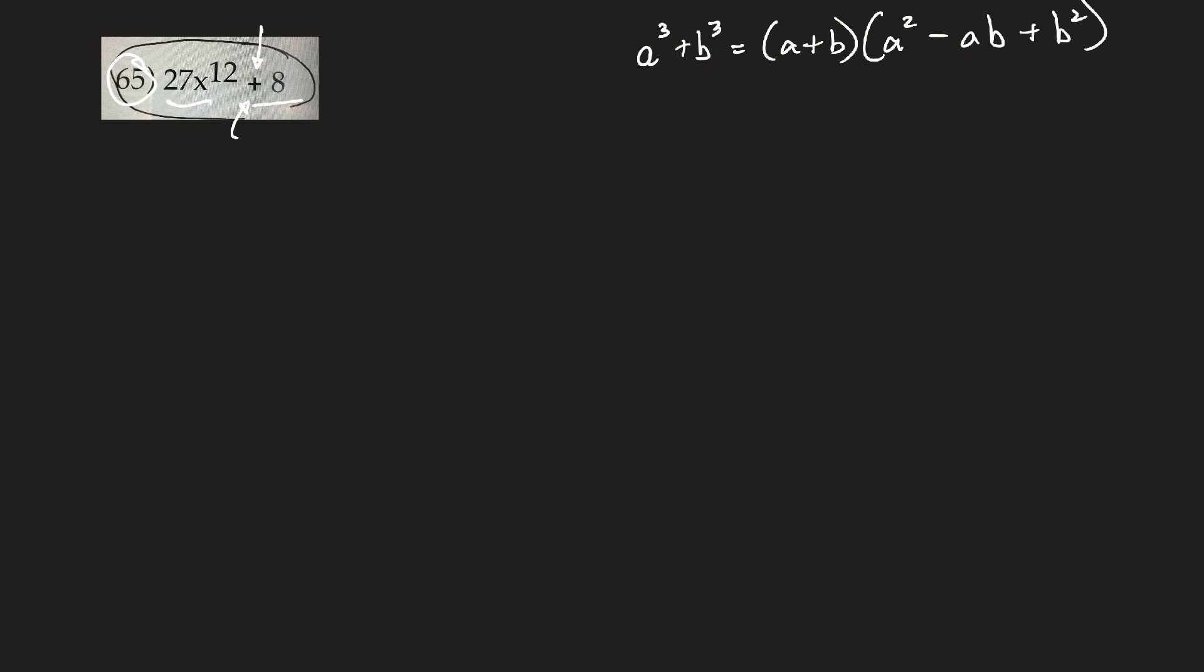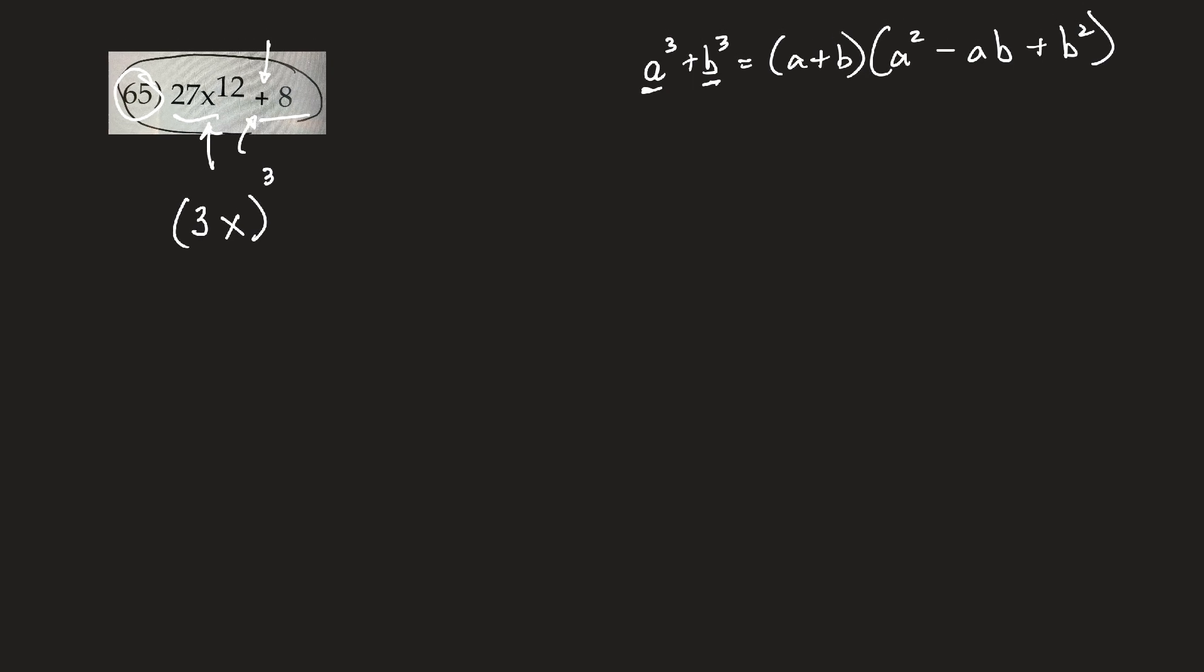Okay, so that's the formula. I just now have to figure out what a is and what b is. So 27x to the 12th, something cubed gives me that. Well, 27 is 3 times 3 times 3, so I know it's 3. And then x, but how many x's are there? I've got to get a 12 out of it, so the power of a power rule would tell me that that has to be a 4. So 3x to the 4th cubed will give me this. And where I'm going now is this 3x to the 4th is going to be what I'll plug in for a.